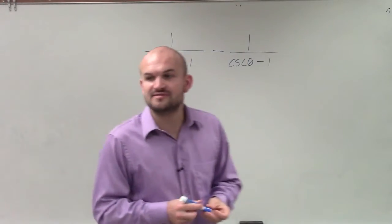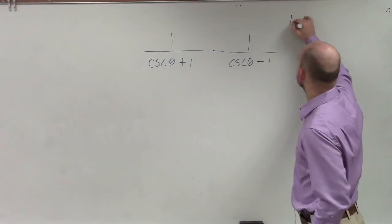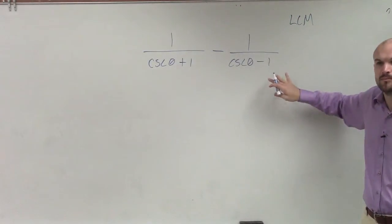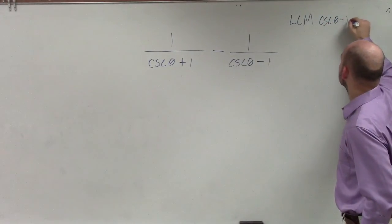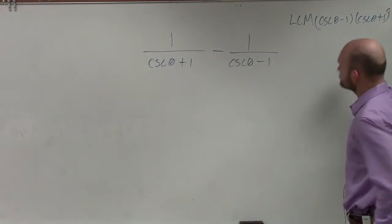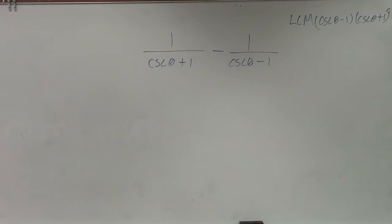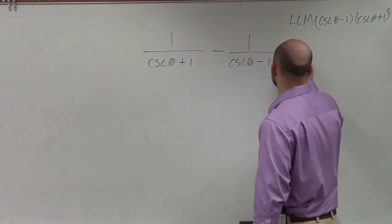So what I can do is find my least common denominator. When I'm looking at this and I want to determine my least common denominator, I know it's going to have to contain both of these denominators, which will be cosecant of theta minus 1 times cosecant of theta plus 1. So what I'm going to do on both sides is multiply by the other term to get my LCM.